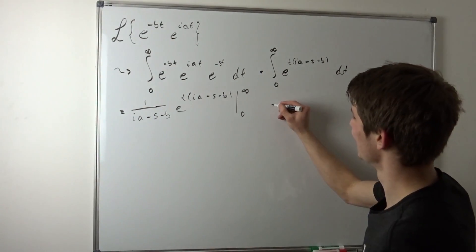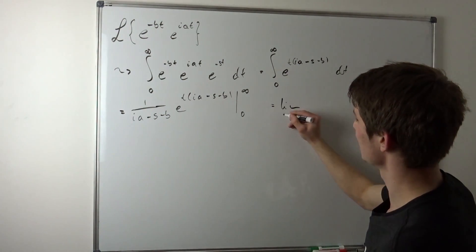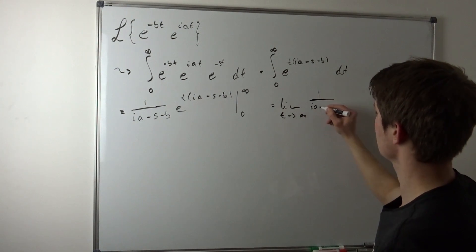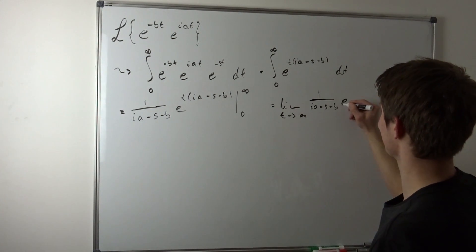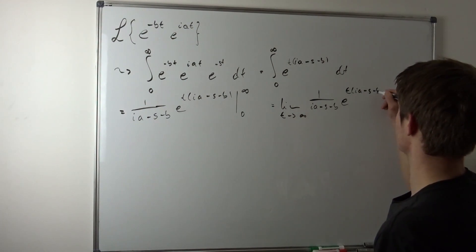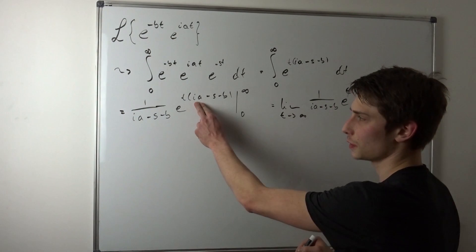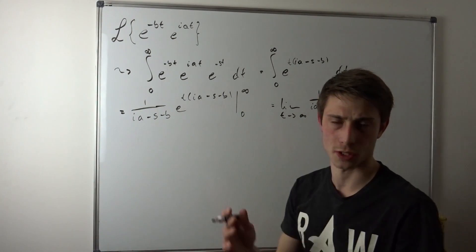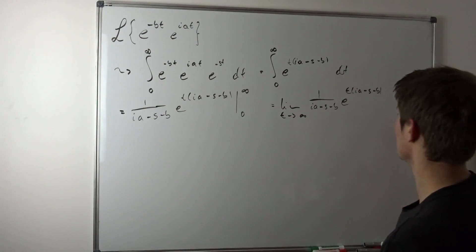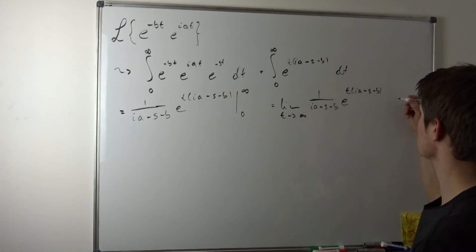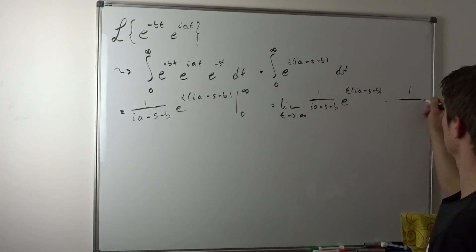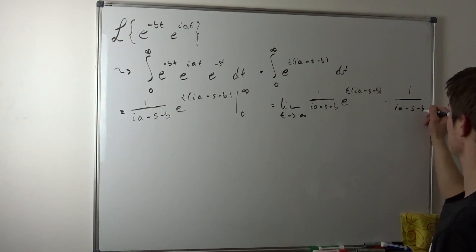We have to plug in the limits first. So that's the limit as t approaches infinity of 1 over (ia minus s minus b) times e to the t(ia minus s minus b). And if we plug in zero, this exponent becomes zero, so that's just e to the zero power — that's just this term right here. And we have a minus because it's the second part of the integration, so it's minus 1 over (ia minus s minus b).